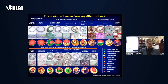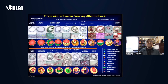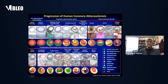The progression of coronary heart disease — work that we have done — shows intimal thickening, intimal xanthoma (fatty streak), pathologic intimal thickening without and with macrophages, early fibroatheroma, late fibroatheroma, thin cap fibroatheroma, and then causes of thrombosis. We have described three main causes of thrombosis: plaque rupture, plaque erosion, and calcified nodule.